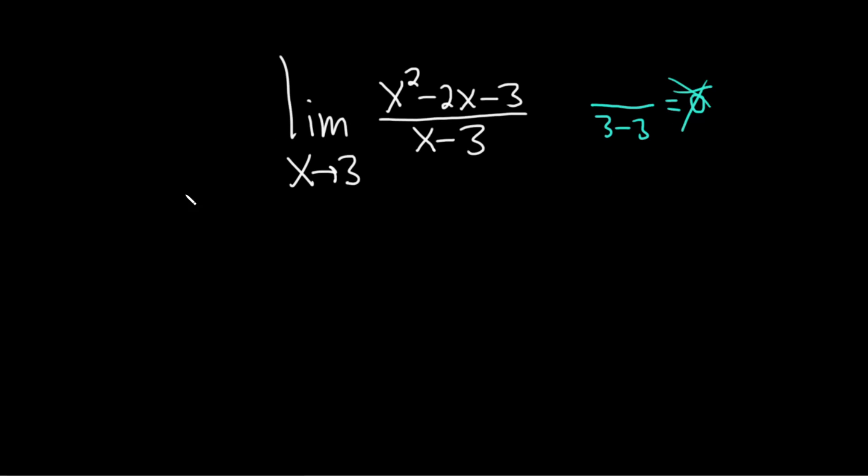So we need to do something else, and that something else is going to be attempt to factor. So let's try that. In the numerator, we have a quadratic. So let's just try to factor by guessing. So x, parentheses, x, parentheses, and then here we just still have the x minus 3.